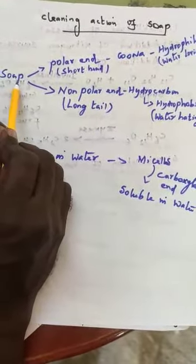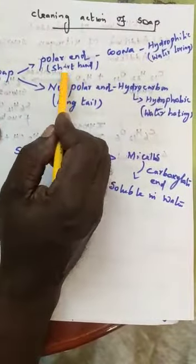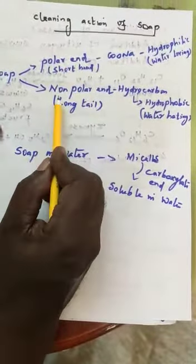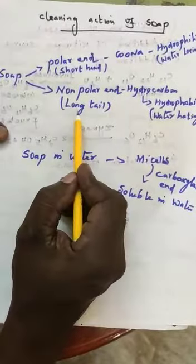Generally, soap molecule having two ends. One is a polar end. It is a short head end. And another one is a non-polar end. It is a long tail.